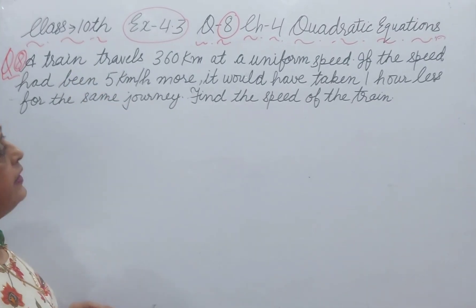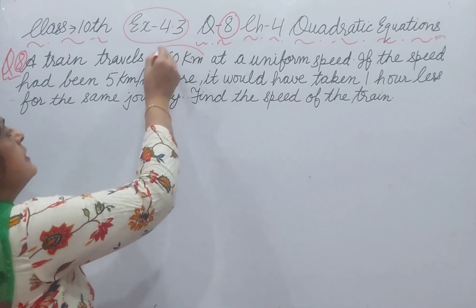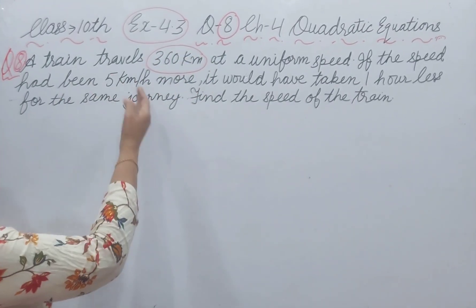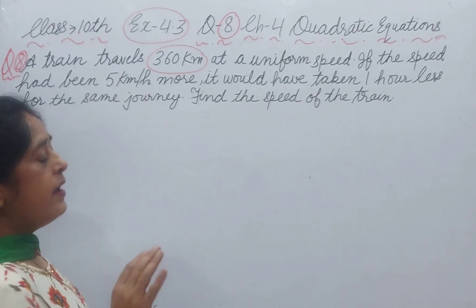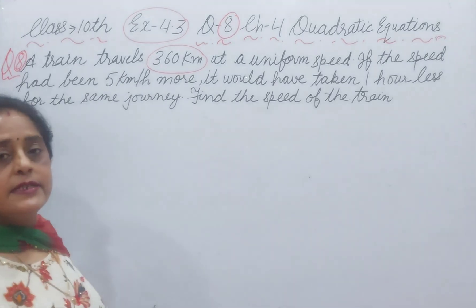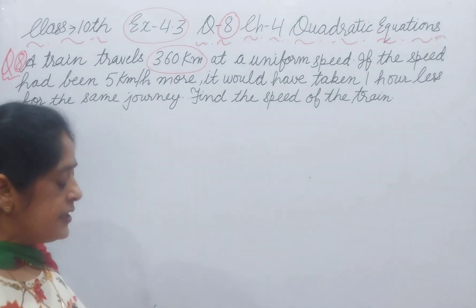That a train travels 360 km at uniform speed, and if the speed is increased by 5 km per hour, then it takes 1 hour less to cover the same distance. Find the speed of train.